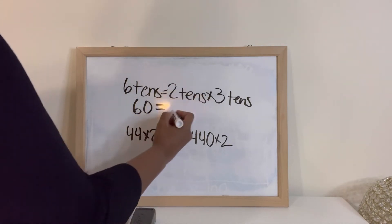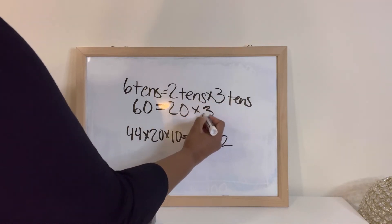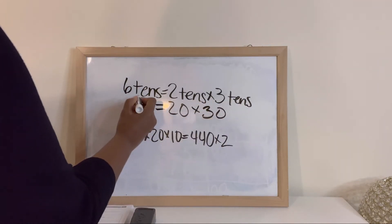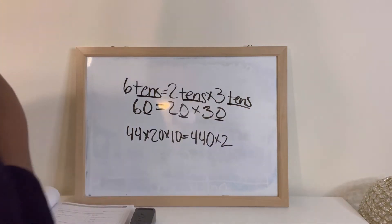Then we're doing 2 tens, which is 20, times 3 tens, which is 30. So remember, whenever you see tens, just add one zero.